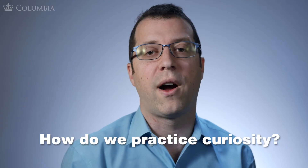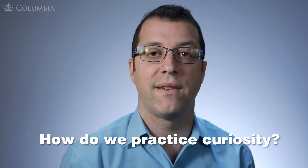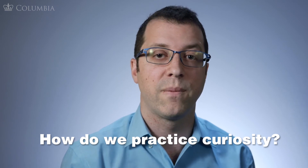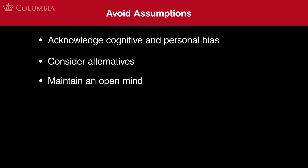So what are the steps to help us avoid these cognitive traps and start to practice curiosity? Step one: avoid making assumptions. This means that first, you need awareness that you are making an assumption. You can try to do this by acknowledging cognitive and personal biases, considering alternatives, maintaining an open mind, and being genuine throughout this process.